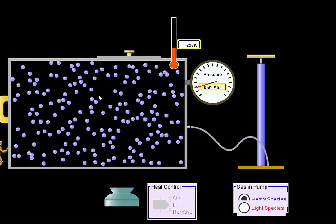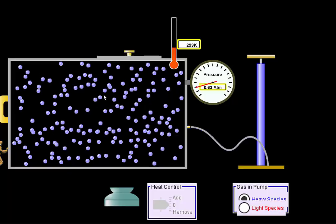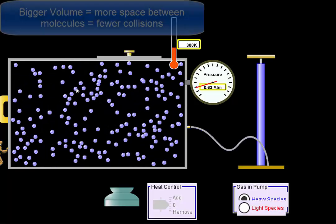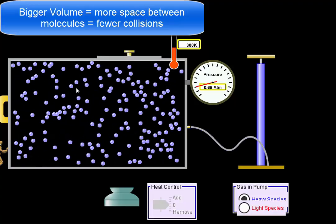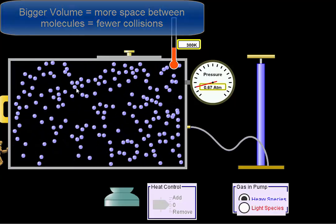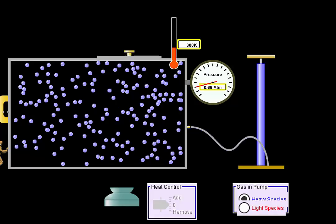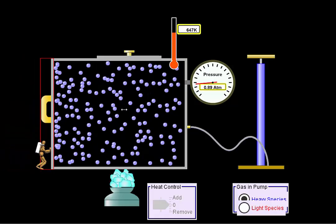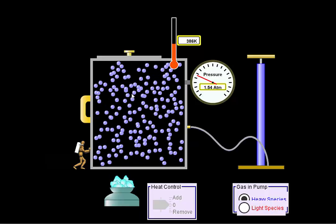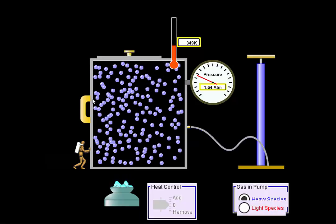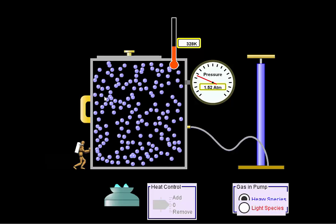And because they have a larger space between them, they don't collide as often. If they don't collide as often, the pressure is lower. So when the volume is big, my pressure is small. When my volume is small, I've compressed my molecules into a smaller container, so there's a lot more collisions. So when my volume is small, my pressure is big.